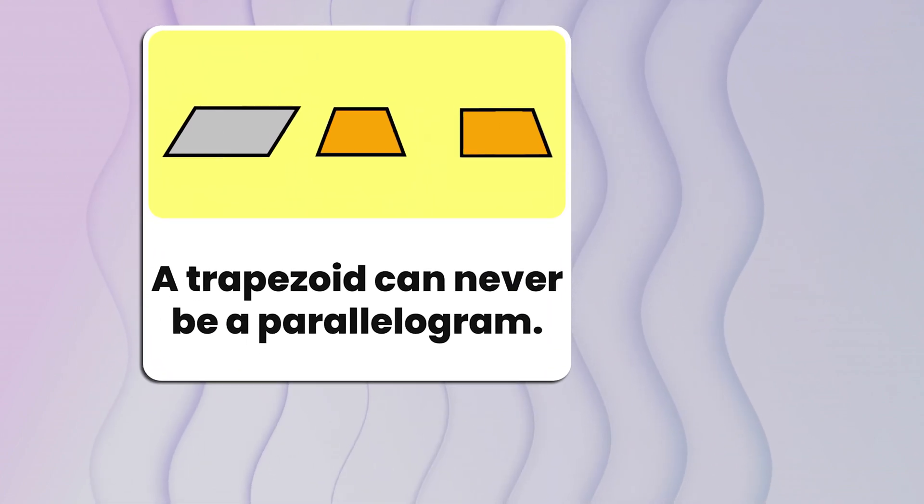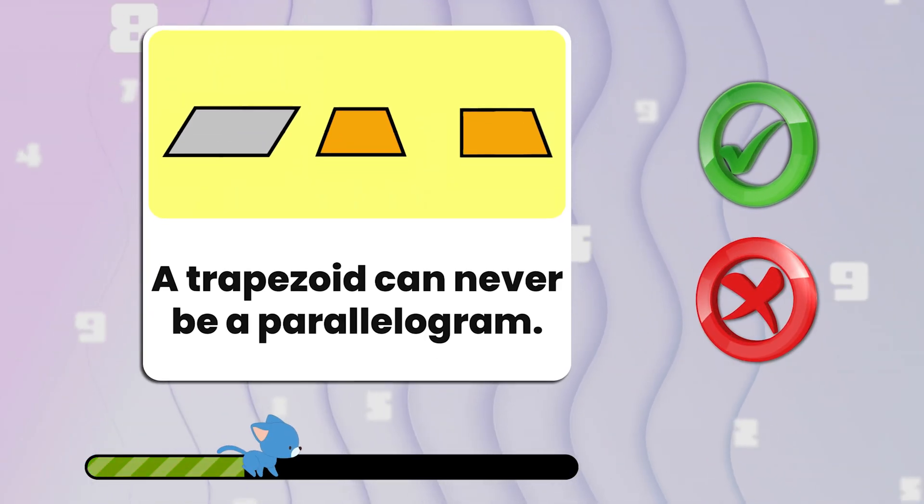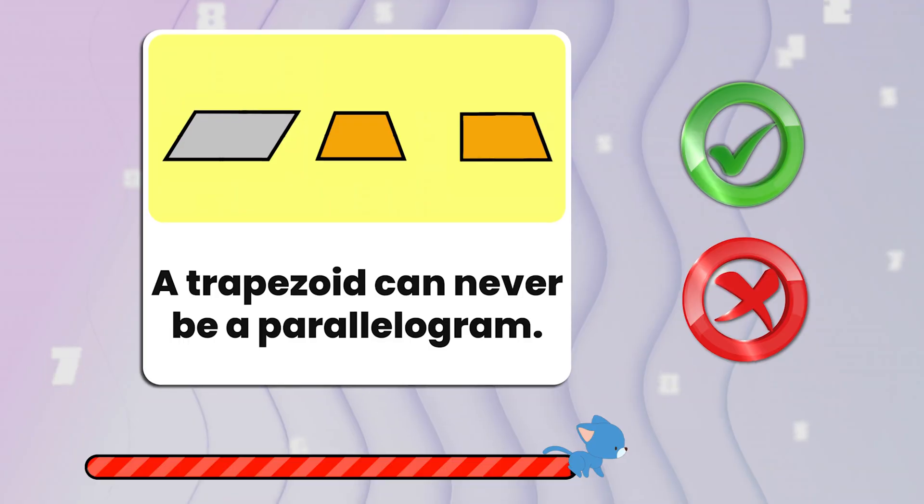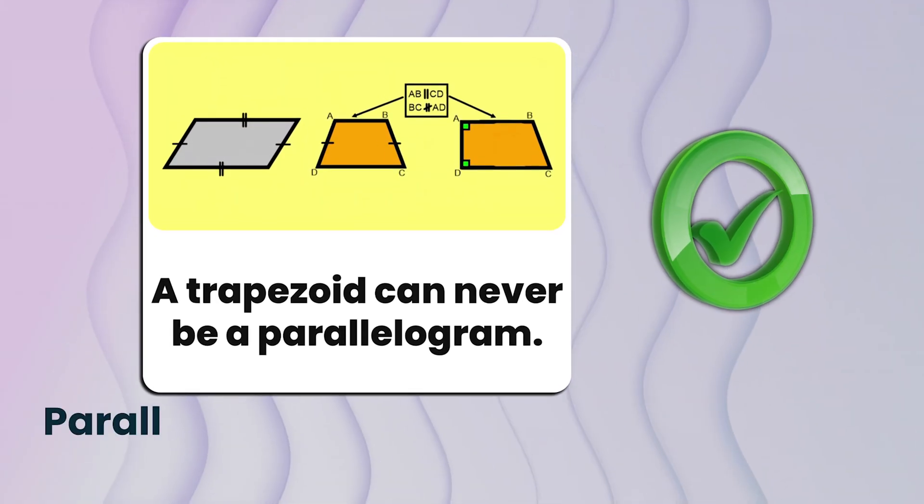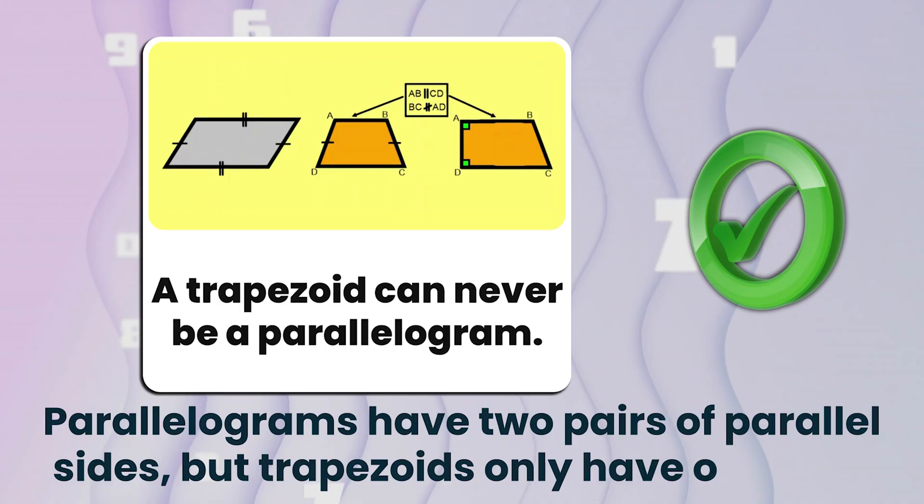Number eleven. A trapezoid can never be a parallelogram. True or false? That's true. Parallelograms have two pairs of parallel sides, but trapezoids only have one pair.